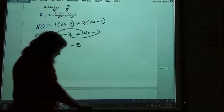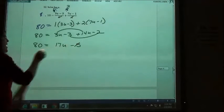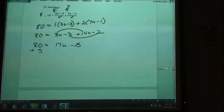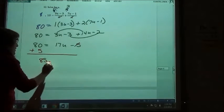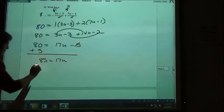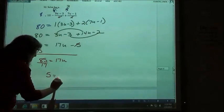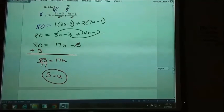Now I want to solve that for u. So if I want to get the u by itself, what should I do next? So I'm going to add my 5 when I move it over to the other side, right? 85 equals 17u. And then I'm going to 85 over 17, and that should go in there evenly. 85 over 17 reduces down to 5. And we should get that nice whole number answer on these ones anyway.